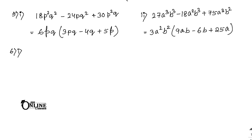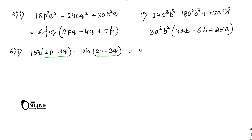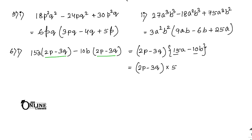Sum number 6.1: 15a(2p - 3q) - 10b(2p - 3q). Here (2p - 3q) is the common bracket term. Also, the HCF of 15 and 10 is 5. So the common factor is 5(2p - 3q). Inside the next bracket: 3a - 2b. The final answer is 5(2p - 3q)(3a - 2b).